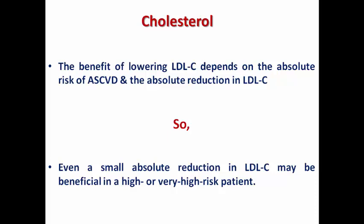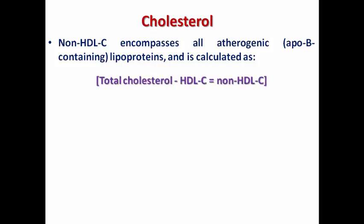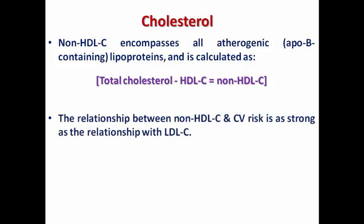We usually use in the guidelines the terminology of non-HDL cholesterol, which includes all atherogenic or ApoB-containing lipoproteins and is calculated as: total cholesterol minus HDL cholesterol equals non-HDL cholesterol. The relationship between non-HDL cholesterol and cardiovascular risk is as strong as the relationship with LDL cholesterol. That's why sometimes we use non-HDL cholesterol as a surrogate target rather than LDL cholesterol, especially in those with marked hypertriglyceridemia.